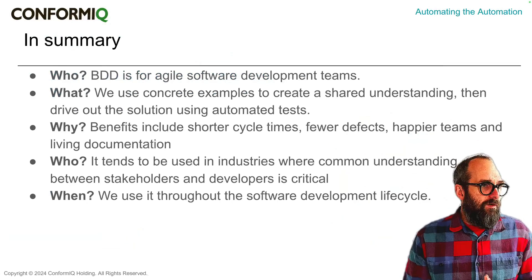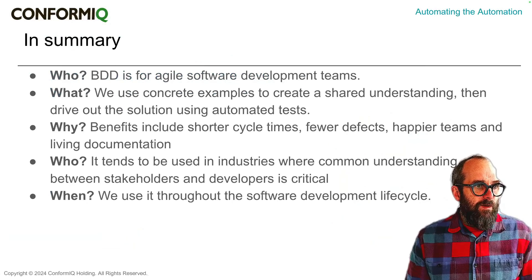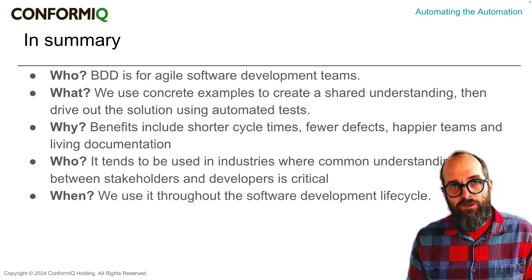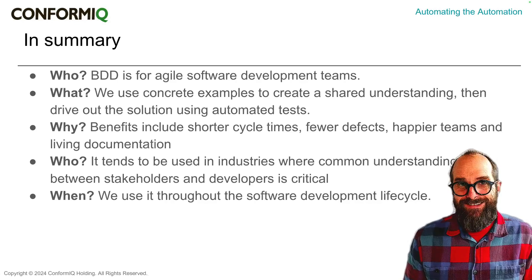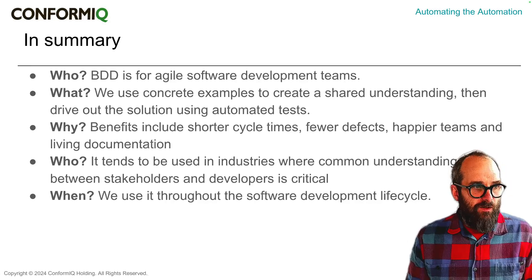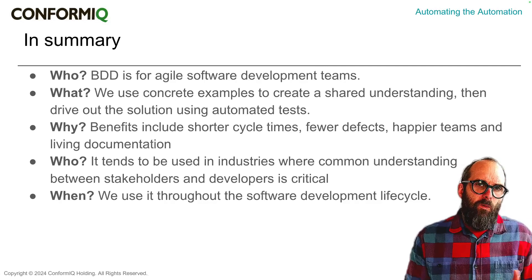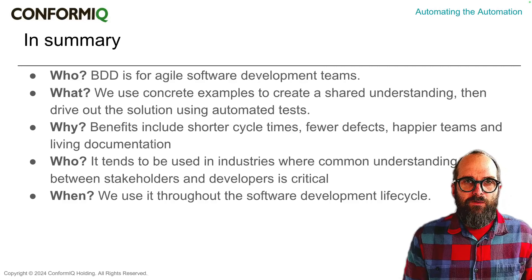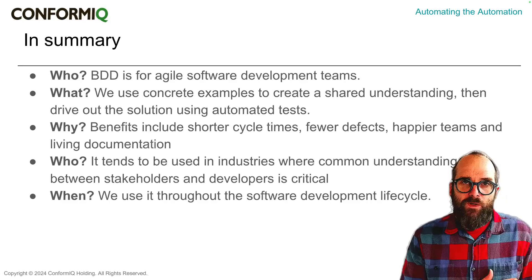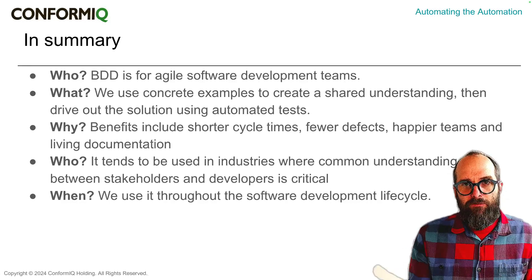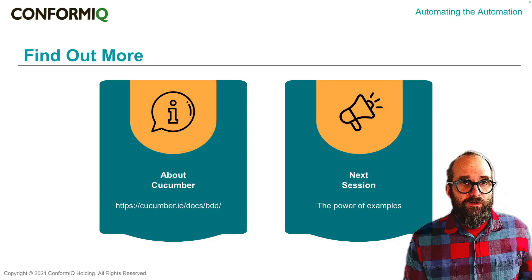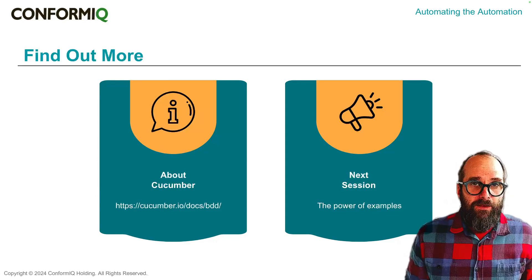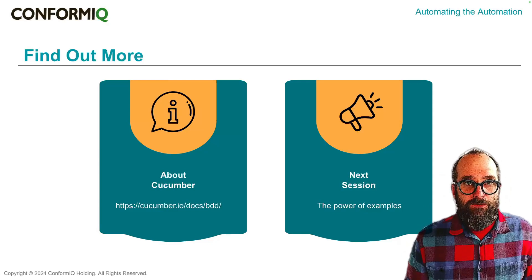In summary: who is BDD for? It's for agile software development teams. What is it? We use concrete examples to create shared understanding and then drive out a solution using automated tests. Why would you use it? You'll see benefits like shorter cycle times, fewer defects, happier teams, and living documentation. Who uses BDD? We tend to see it used most in industries where there's a really business-critical need for common understanding, and right throughout the software development lifecycle from before the code gets written to afterwards. If you want to find out more, go to cucumber.io/docs/bdd. In the next session we're going to zoom into that discovery piece and talk about the power of examples. See you next time.